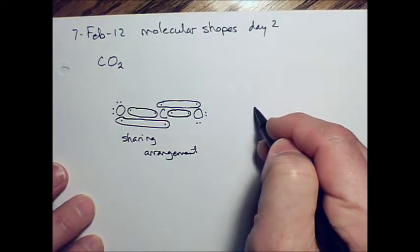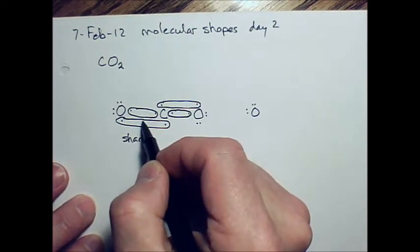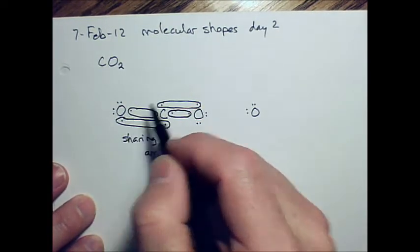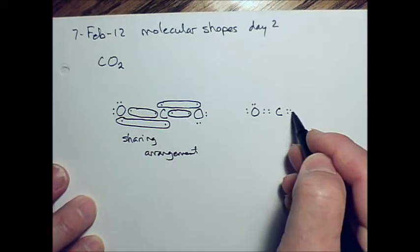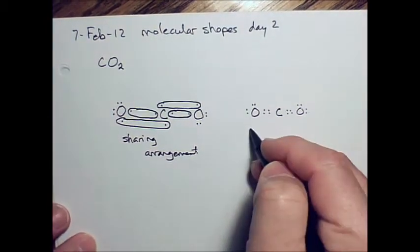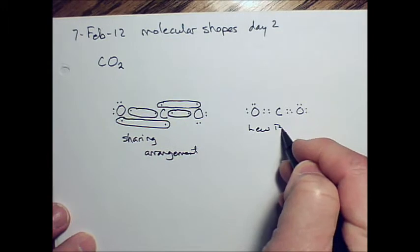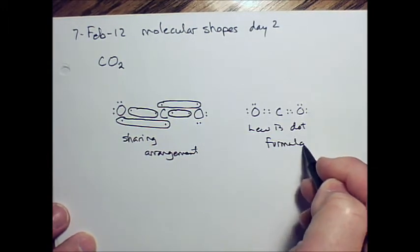Then the Lewis dot formula, we're going to have the oxygen with four dots in between the carbon and the oxygen, one, two, three, four. Four dots over here as well, one, two, three, four. And more electron dots over here, and that's the Lewis dot formula.